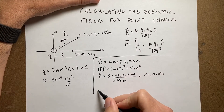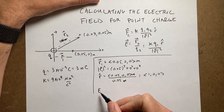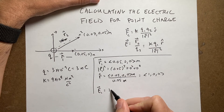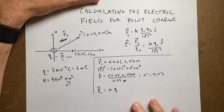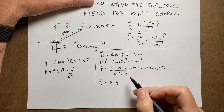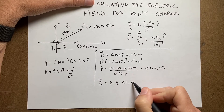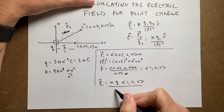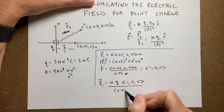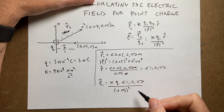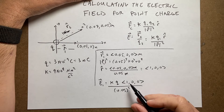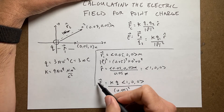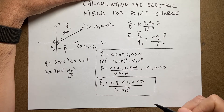Now I can put it in the formula. E1 is going to be k times q times r hat (1, 0, 0), divided by the magnitude of r squared, which is 0.05 squared meters squared. I'm going to get a vector answer because it's scalar times scalar times scalar times vector. I'm going to put this in Python and show you how to calculate this in the next step.